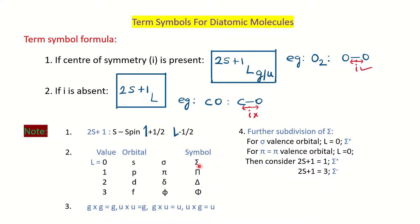Further, if the symbol determined is Σ, there is a subdivision applicable only for Σ, not for other symbols. If the Σ symbol comes from a sigma orbital (where L = 0), it is given Σ⁺. If L = 0 is obtained because of a π orbital (pi × pi combination), then we consider the multiplicity 2S+1: if the value is 1, it is Σ⁺, and if the multiplicity is 3, it is Σ⁻. We will see how to get L = 0 from π orbitals by taking examples.